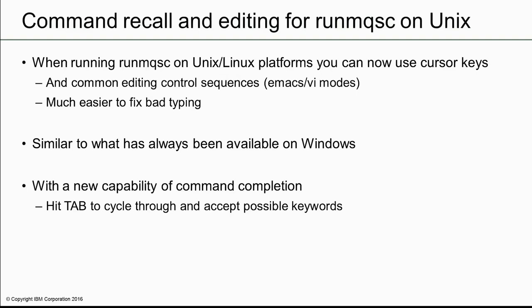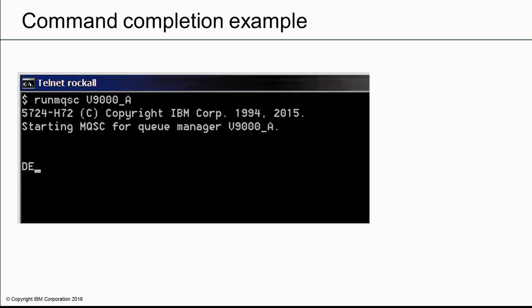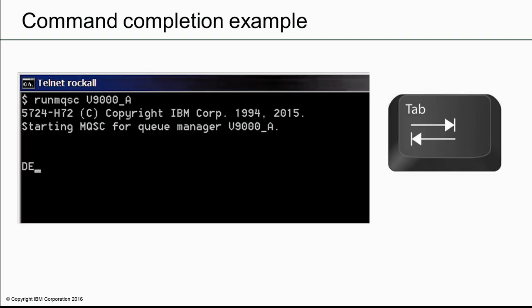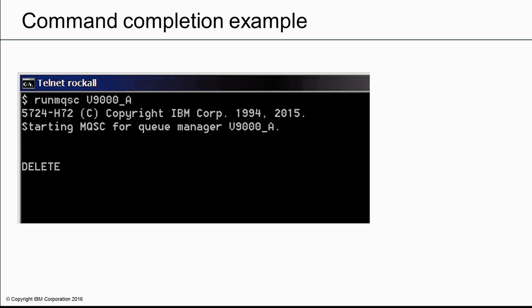One of my favorite features in version 9 is command recall and editing for RunMQSC on Unix systems. When you do a lot of work inside RunMQSC but also make a lot of typing and spelling errors, this will save a lot of time. Going beyond what you can do on Windows, there's also some syntax assistance to help complete keywords. In this example, I've started to type a command. When I hit tab, it tells me a possible completion of that command. Hitting tab again takes me to a further possible completion. Hitting enter will select what I want, and then I can continue typing further.